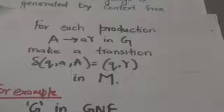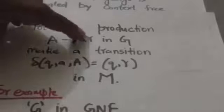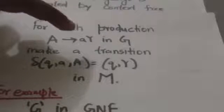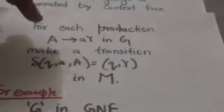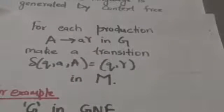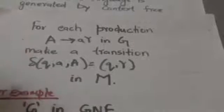Since we have converted the context-free grammar G into GNF, all productions will be in the form A derives a·γ, where γ is either a string of variables or the empty string. For each such production A derives a·γ of grammar G, we will make a transition δ(Q, a, A) = (Q, γ) in Pushdown Automata M.